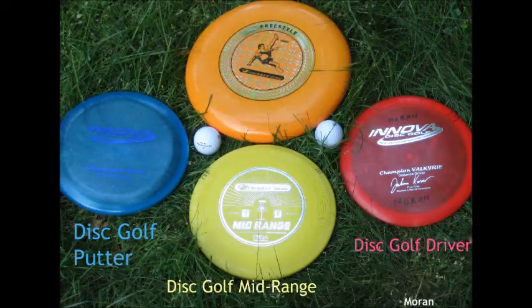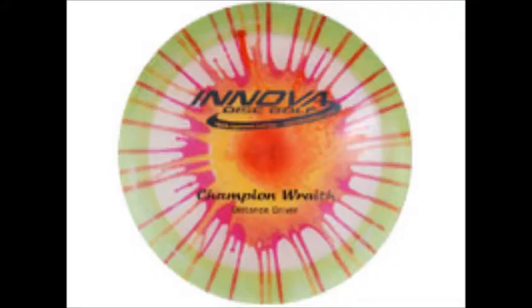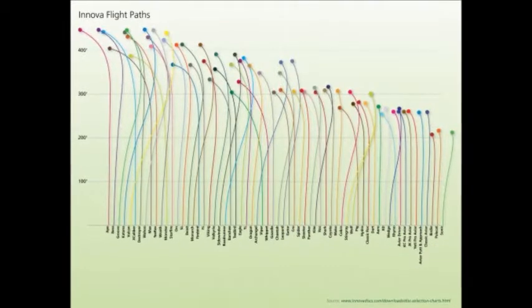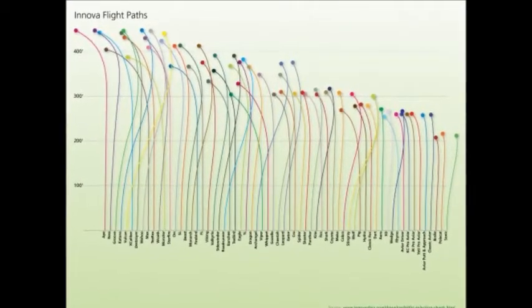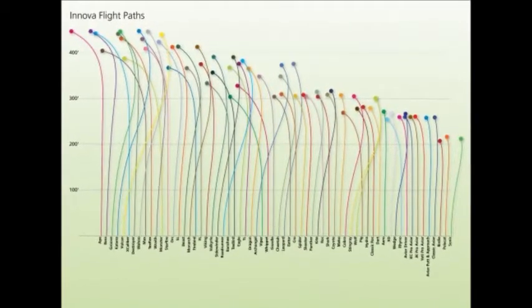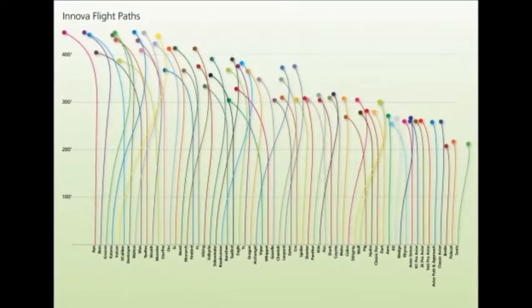Once you have a course picked out, the next step is to select a disc or collection of discs to use. This aspect of disc golf is often overwhelming to new players. With so many names, numbers, and colors, it's difficult to know what's important to pay attention to. The first, most important, and most complicated decision is the choice of driver. There are more models of driver than any other type of disc.